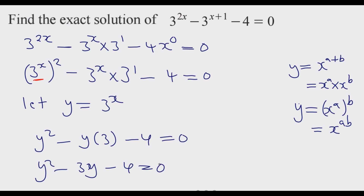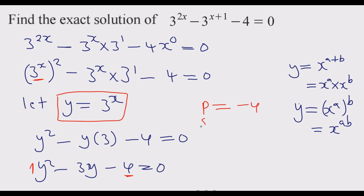At this point this becomes just a common quadratic equation. The first thing we need to do is find the value of y. Once we know the value of y we can easily solve for x. The product is 1 times negative 4, which is negative 4. The sum of the two numbers we are looking for is negative 3. What two numbers multiply to give negative 4 and sum to give negative 3?